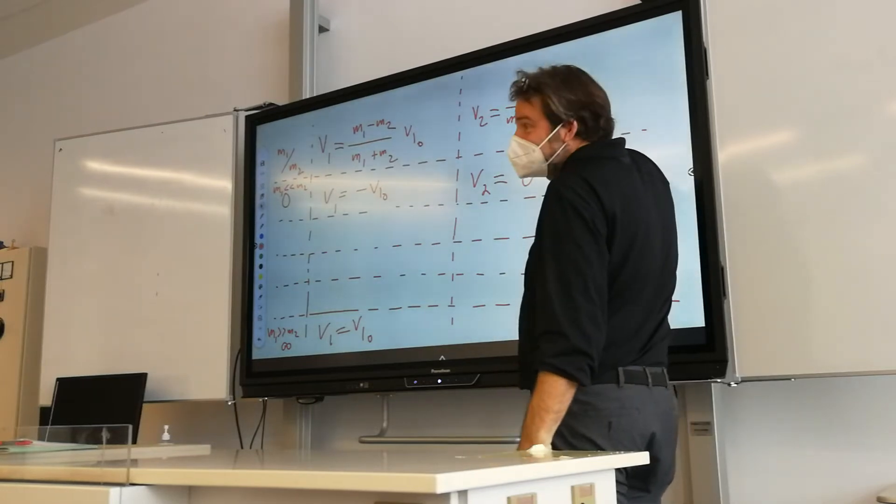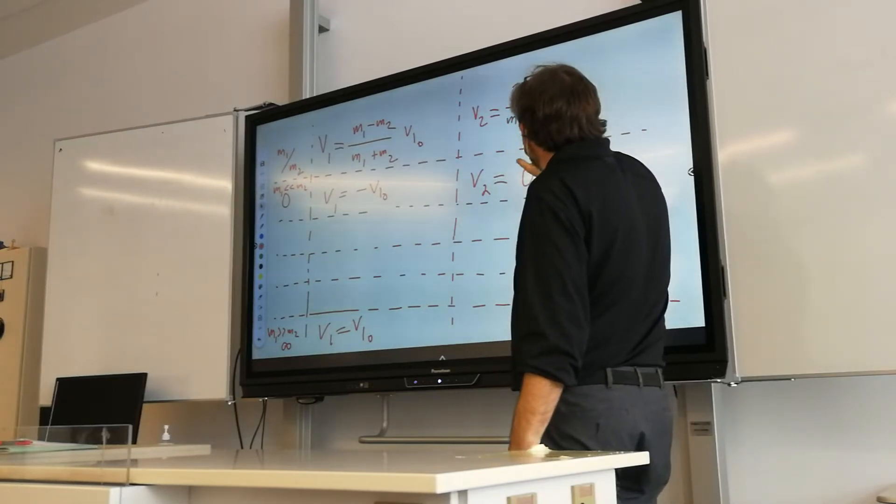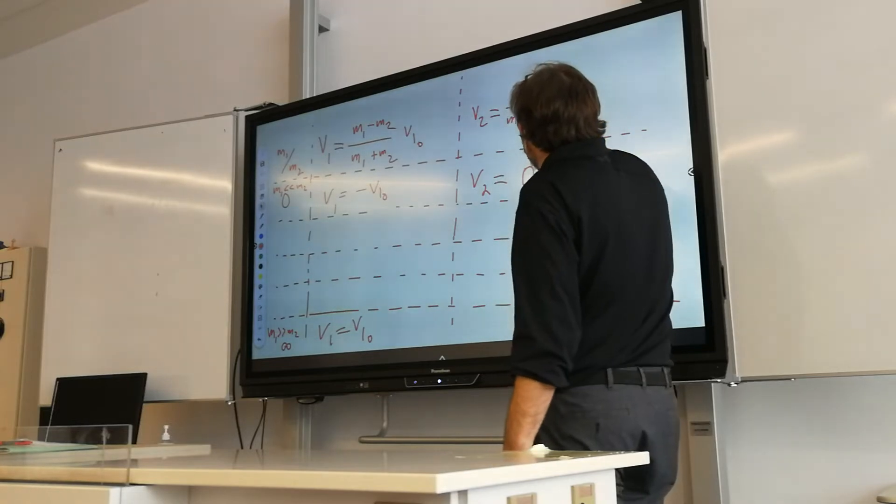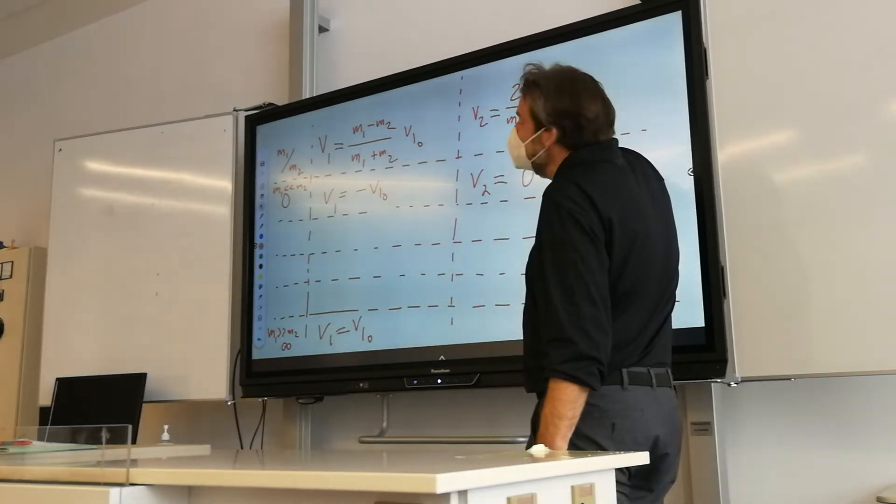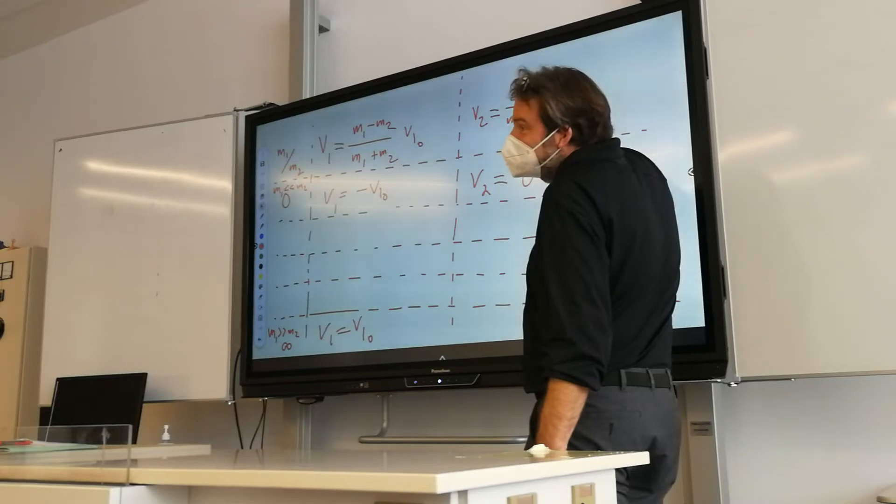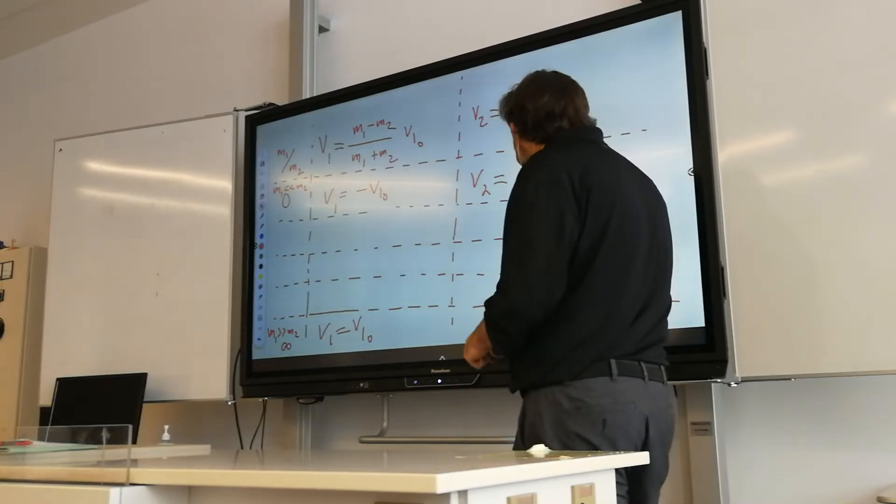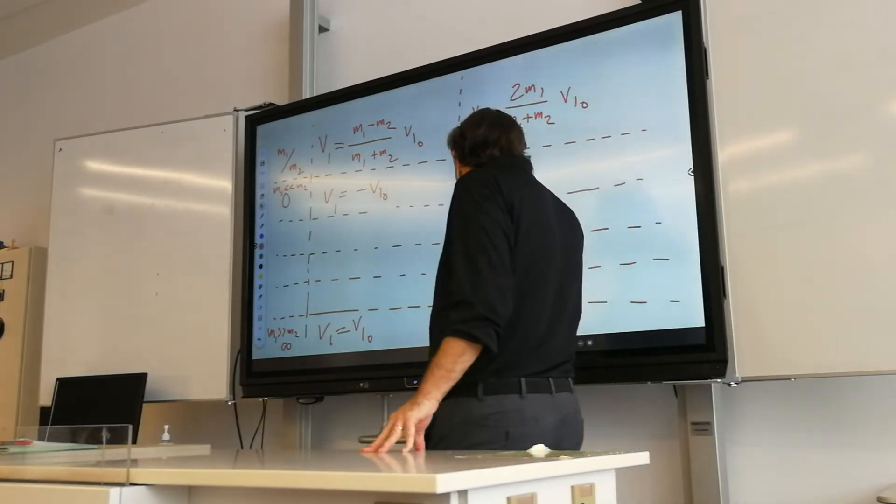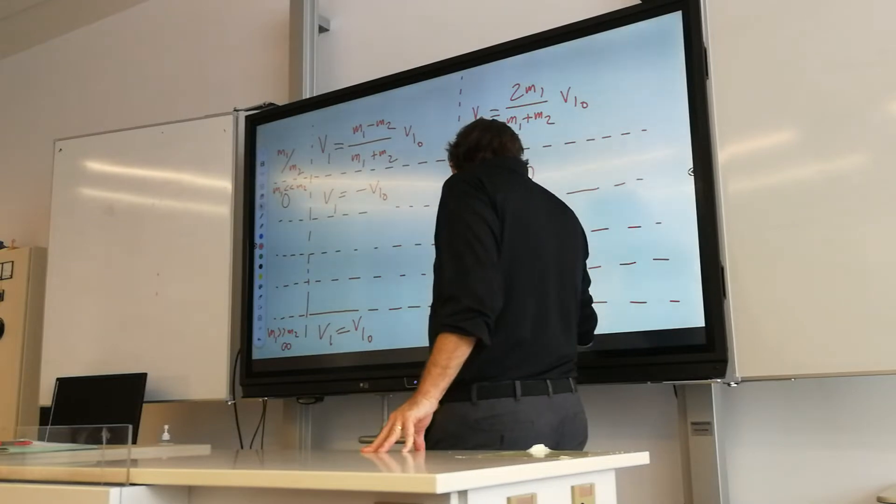Well, we can ignore M2, right? Yeah. Because... M2 is basically 0. What's 2M1 divided by M1? Just 2. So, 2V1,0. So, we get V2 equals 2V1,0.